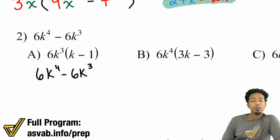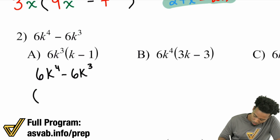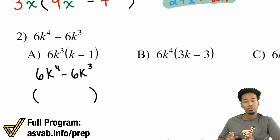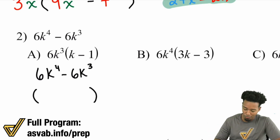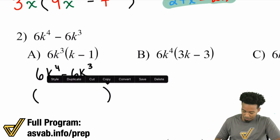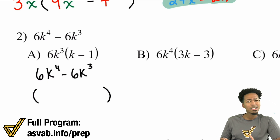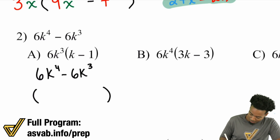So I'm going to write this out again. We have 6k to the power of 4 minus 6k cubed. Here's what we do. Ask yourself what can I divide out in terms of just the numbers, then we work with the variables. Do one thing at a time. If I looked at just the numbers — the 6 and the negative 6 — what could I factor out? What do they share? 6. You can divide a 6 out of either of those 6s. So I'm going to go ahead and factor out a 6.